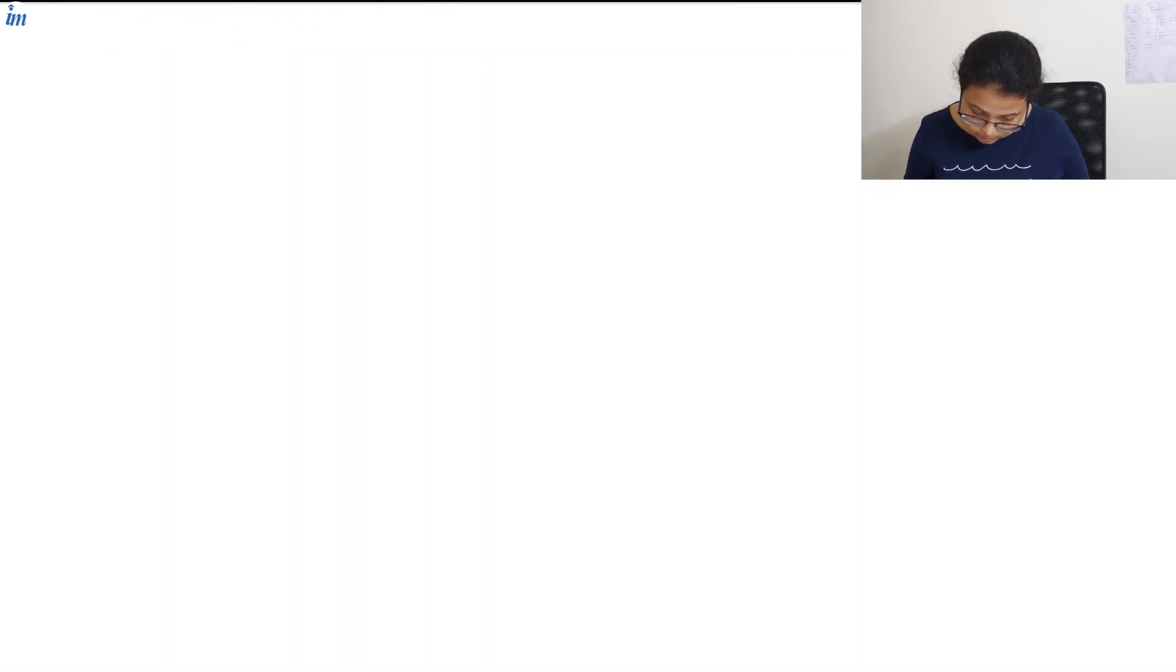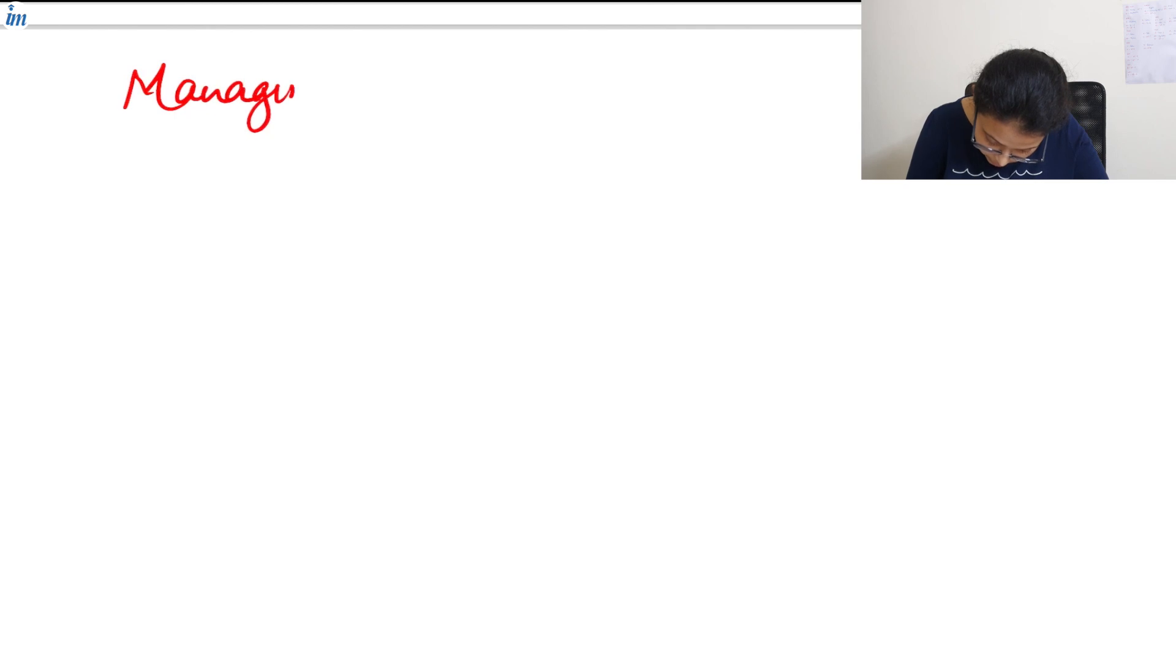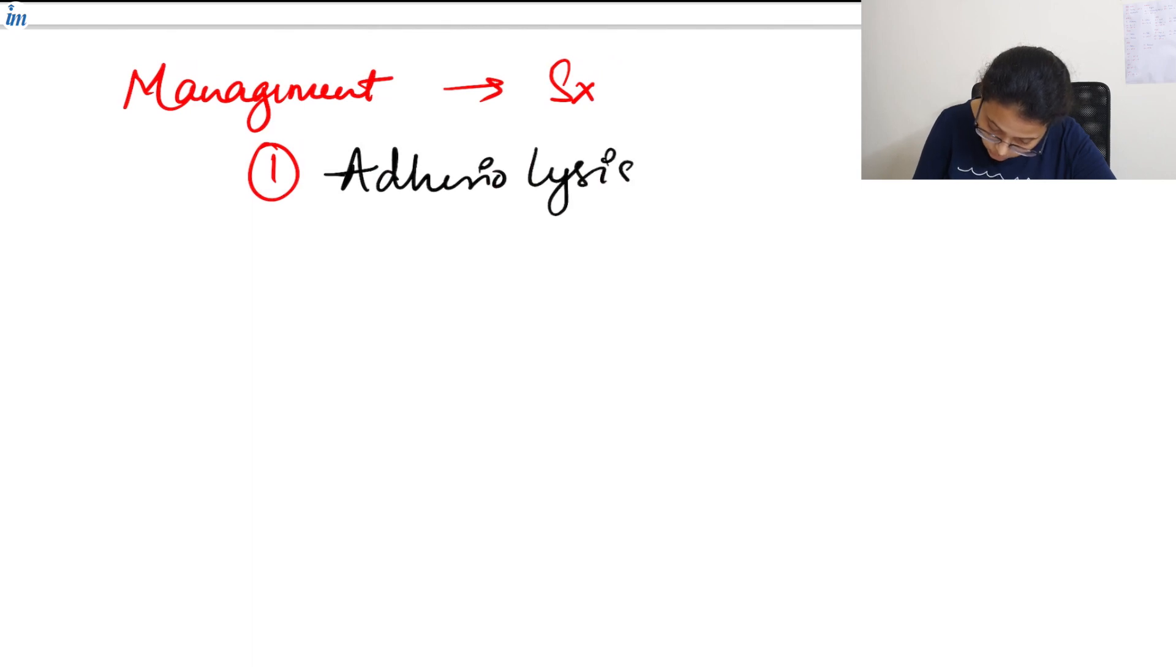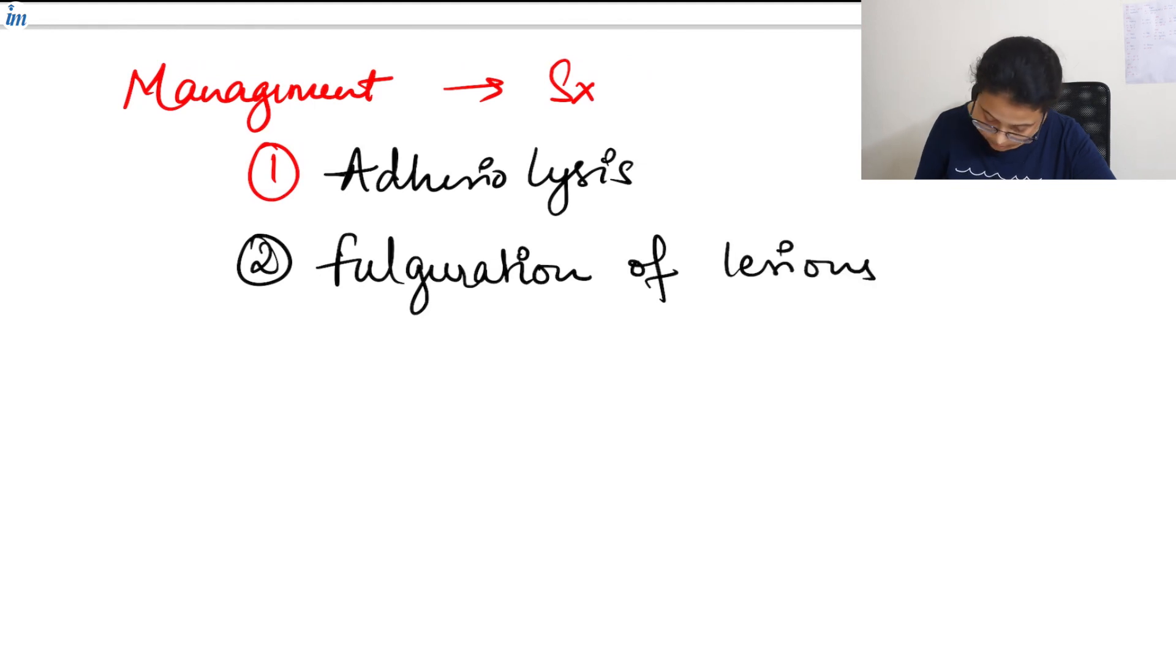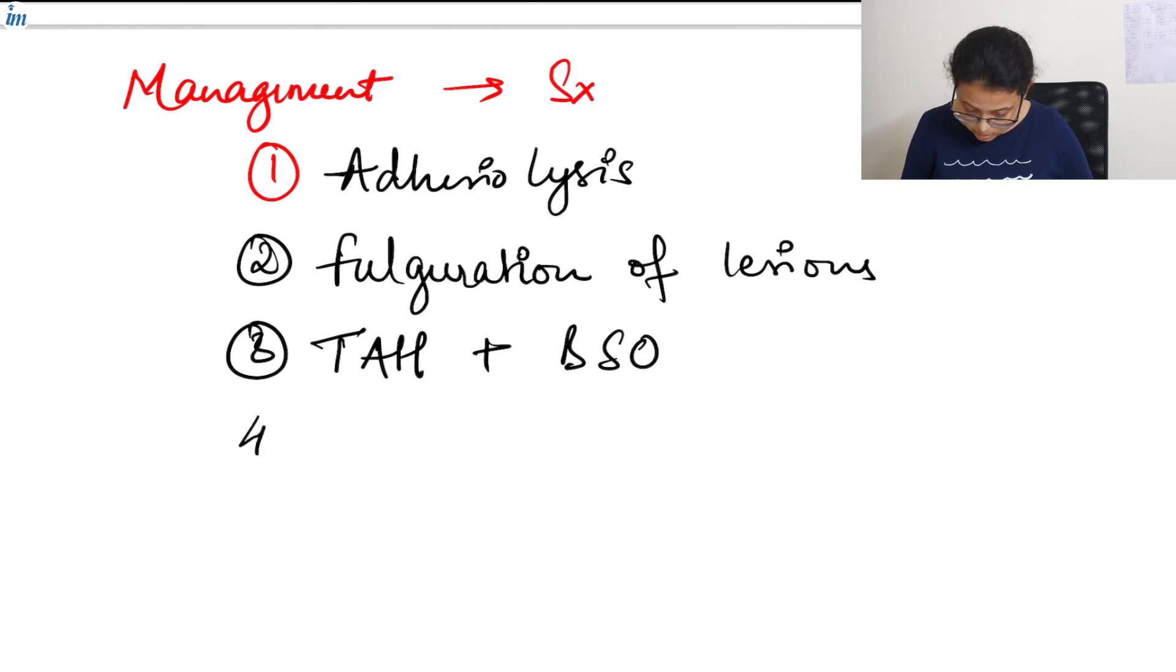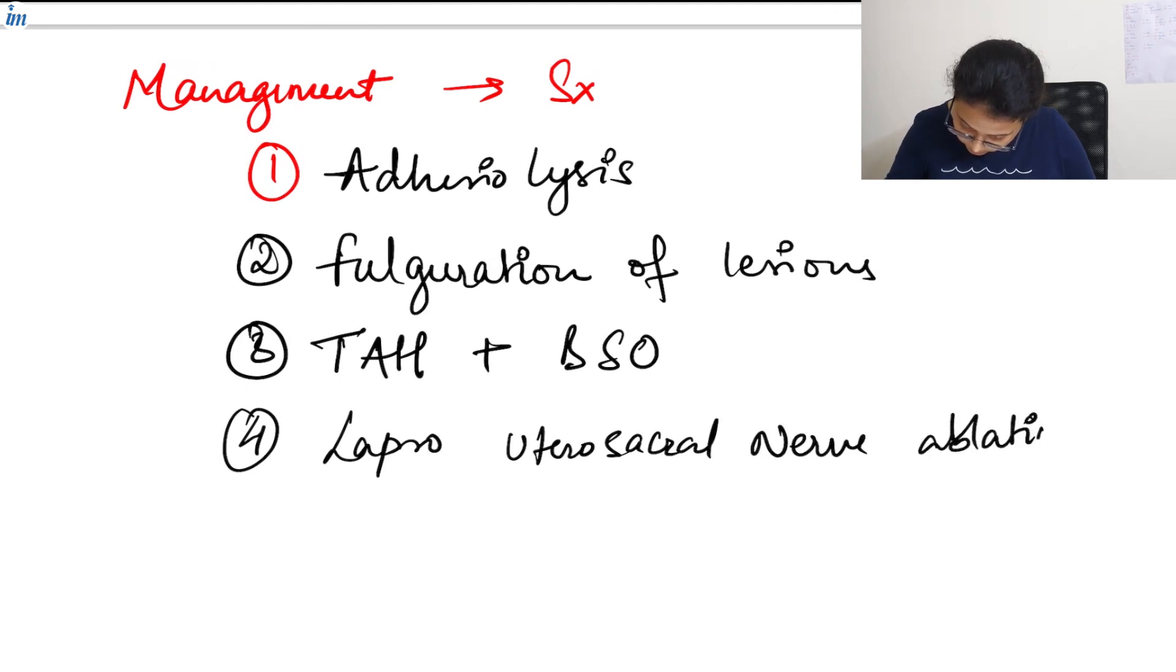For the management we have surgeries. First is the adhesiolysis when there are adhesions. Then we have fulguration of lesions. Then we have transabdominal hysterectomy. The last one is laparoscopic uterosacral nerve ablation.